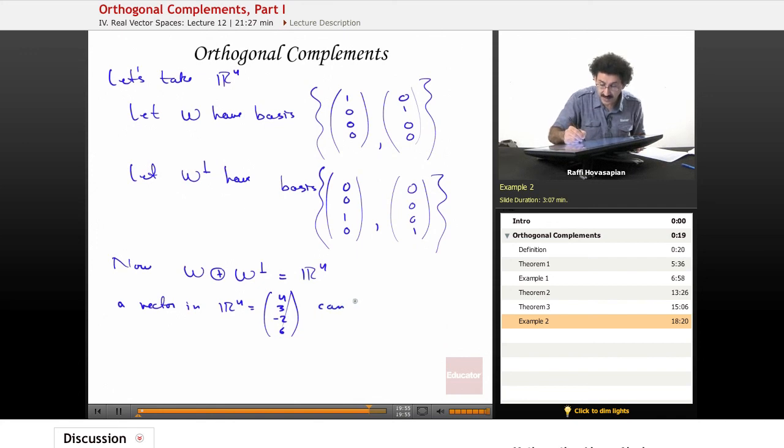it can be written as a vector from this subspace plus a vector from this subspace, just like what we defined. That's what the direct sum means. This W plus W perp means take a vector from here, add it to a vector from here, and you have a vector in the sum, which happens to be R4.